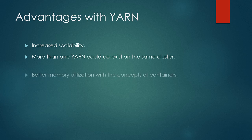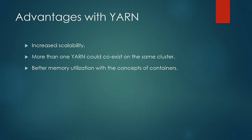Third is the better utilization of memory with the introduction of the containers concept. Containers are conceptually similar to the slots in classic MapReduce, except that in classic MapReduce the slots are fixed in nature, while containers are more flexible. In classic MapReduce, a single task tracker would have a fixed number of slots specific for map tasks and reduce tasks. However, containers in YARN can run map, reduce, or any other tasks and are flexible, resulting in better memory utilization.